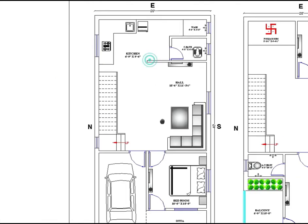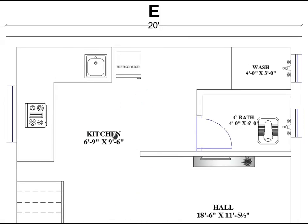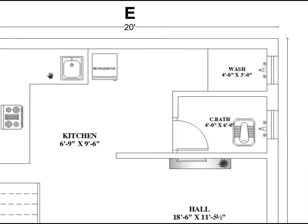Here is the kitchen area, which is 6 feet 9 inches by 9 feet 6 inches — horizontally 6 feet 9 inches and vertically 9 feet 6 inches. Here is the provided wash area for that kitchen.